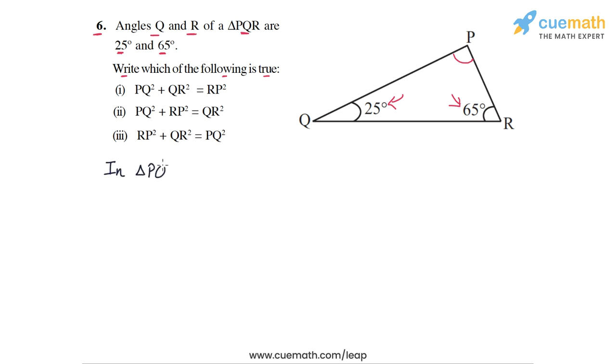So in triangle PQR by the angle sum property, which says that the sum of the angles of a triangle is 180 degrees, we have angle P plus angle Q plus angle R, this must be equal to 180 degrees. So angle P we don't know, we have to find this. But angle Q we know is 25 degrees. And angle R we know is 65 degrees. So we get this sum equal to 180 degrees.